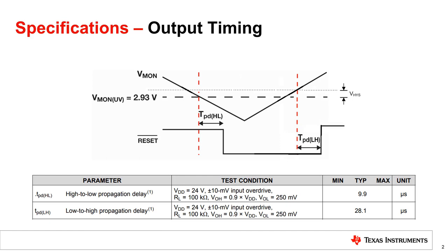One final output specification to consider when designing with supervisors is output timing. For active low devices, high to low propagation delay, or TPDHL, is the time that a supervisor takes to assert its reset output after an under voltage condition occurs at Vsense. Low to high propagation delay, or TPDLH, is the time that a supervisor takes to de-assert its reset output after Vsense rises above the positive going threshold voltage.